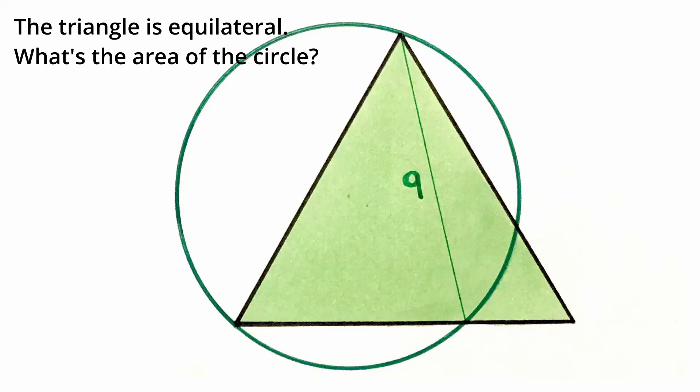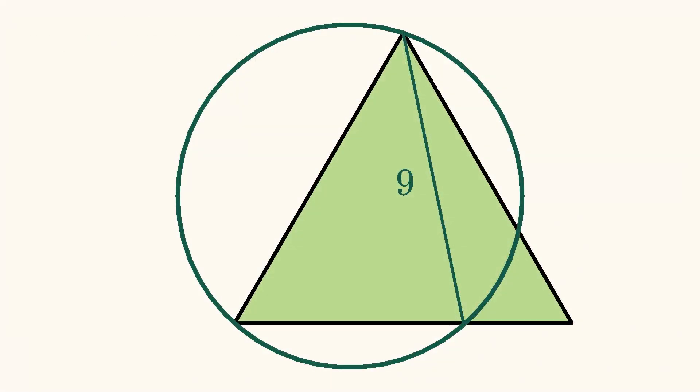The triangle is equilateral. What's the area of the circle? Since the triangle is equilateral, this inscribed angle subtending the chord has a measure of 60 degrees.